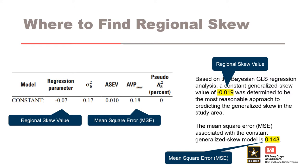Pseudo R-squared is helpful in describing how well the regional skew model explains the variability of skew across the region. This table on the left shows how regional skew results are often presented in USGS studies. This study for the Pacific Northwest presented a constant value, meaning a single regional skew value is used over the entire region. The regional skew value is negative 0.07, reported as the regression parameter, and the mean square error, which is equivalent to the average variance of prediction at the new site (AVP-nu), is 0.18. On the right is an example from a study of the southeastern United States, presenting a constant value with a generalized skew of negative 0.019 and a mean square error of 0.143.